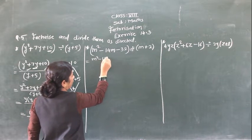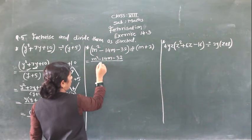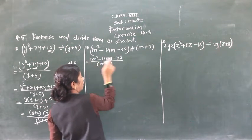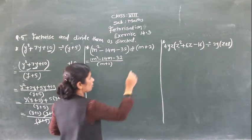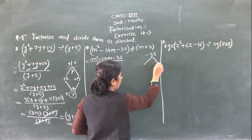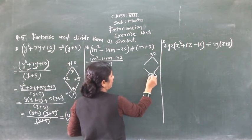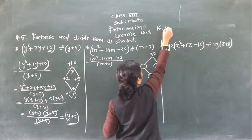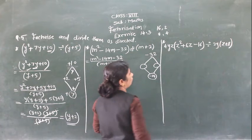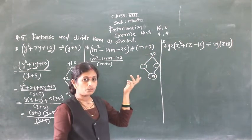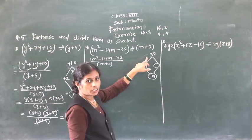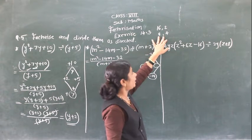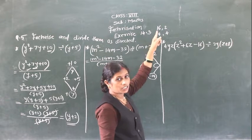Next example: n square minus 14n minus 32 upon (n plus 2). The same method we have to carry out. This 32 — how is 32? It is negative. So we have to find 2 factors such that the middle number is minus 14. Which are the factors of 32? 16 twos are 32, 8 fours are 32. Difference will come: 31, 14. So difference will come 14, meaning 16 and 2.